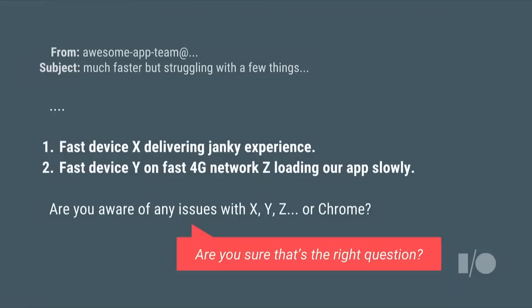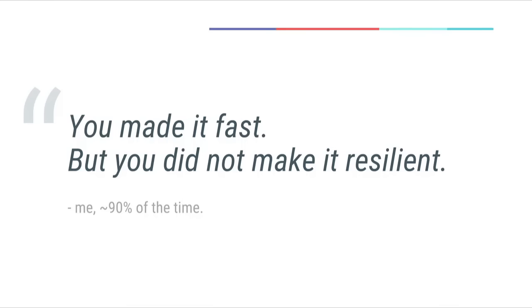"I did everything right. Is there a bug somewhere in Chrome? Maybe it's the carrier. Maybe the phone's at fault. Do you know of anything that could have caused this?" And my answer most of the time is: yeah, probably. There's a million things that could go wrong. But I think you may be asking the wrong question. The problem is that yes, you've made the app fast, which is great — but you forgot to make it resilient.